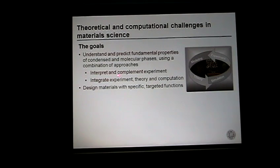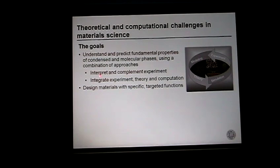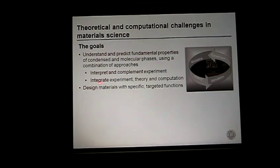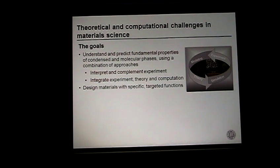What are the overarching goals of using computation and theory? We really want to understand and predict fundamental properties of condensed matter phases. There is a lot to do to interpret and complement experiment—we can make a lot of contribution there. At the end of the day, we should try to really integrate experiment, theory, and computation. One of the goals is also to design materials with specific properties—to understand how we can tune materials to actually build a material with a specific property.